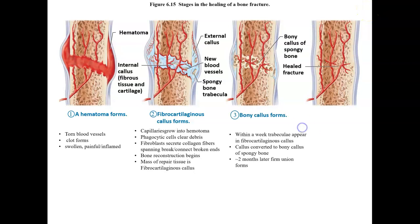Next, the bony callus begins to form, starting within about a week. Trabeculae form within the fibrocartilaginous callus, and the callus is converted to a bony callus of spongy bone. In around two months or less, it will completely form that union and come together.